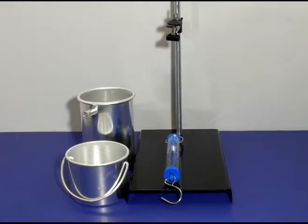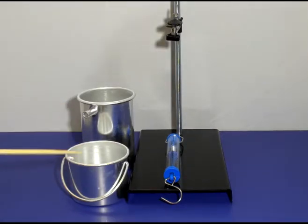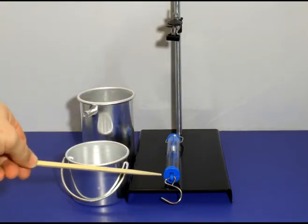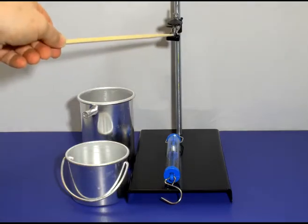The other materials that you will need is an overflow can and catch bucket, a tall support stand, a two and a half Newton spring scale, and a clamp to hold the spring scale.